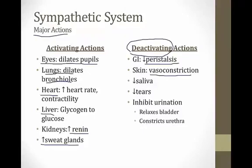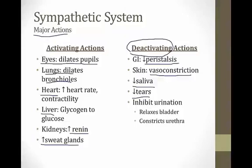The sympathetic system also reduces saliva and tears, inhibits urination, and vasoconstricts the skin — none of which are important for fight-or-flight. There are other actions, such as on the uterus, that are best understood in the context of those specific organs and don't fit neatly into the fight-or-flight paradigm.